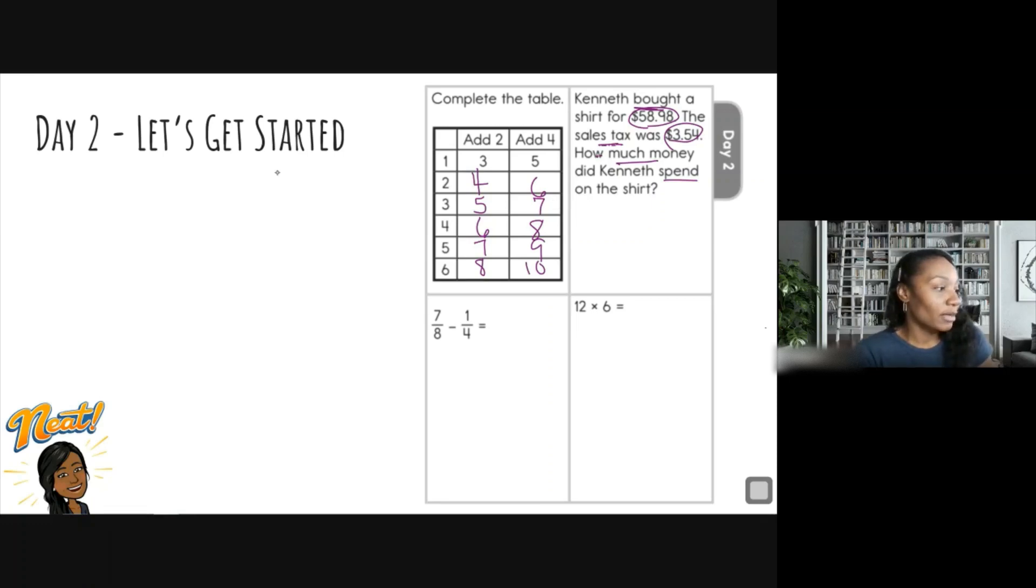So let's come over here. I'm going to write this. So we have $58.98. And I know we're adding, so I'm going to write my plus sign, $3.54. I'm going to line my decimals up. Okay. Eight plus four. Eight, nine, ten, eleven, twelve. Write that two. And I'm going to line that up.